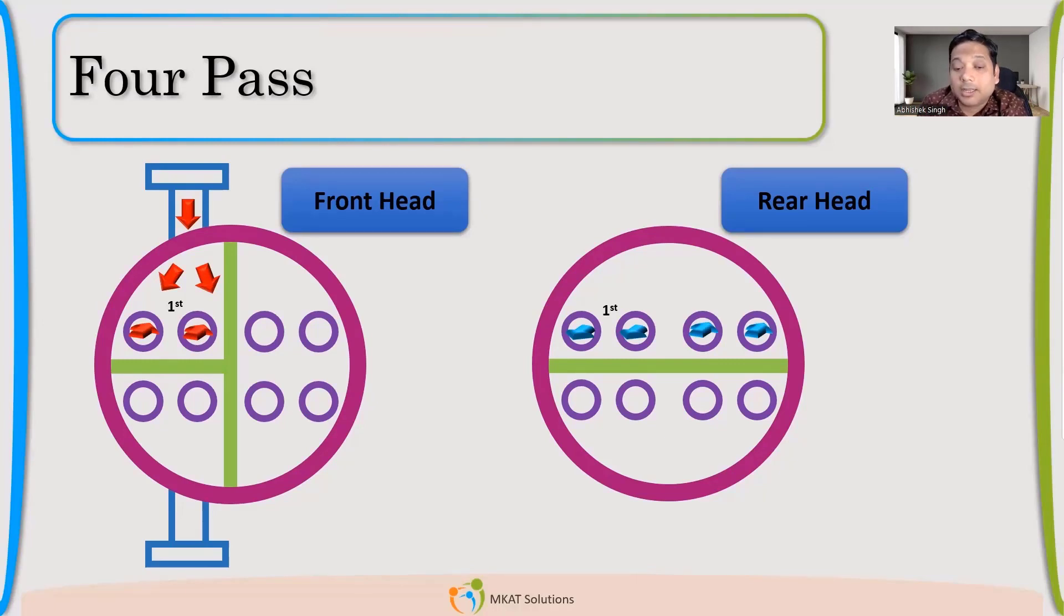Now it will enter in the two other available tubes in the rear side. It will come out like this in the front side. So now two passes. Now here, the partition plate arrangement is such that now two tubes are available for entry. So now it will enter in the available tubes and then it will come out on the other side. So this is third pass. Now it will enter in these two available tubes and will come out from the other side. So total four passes.